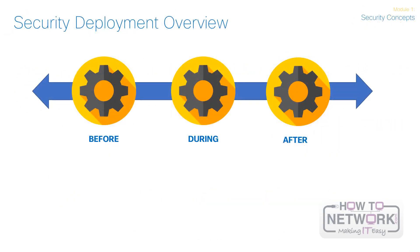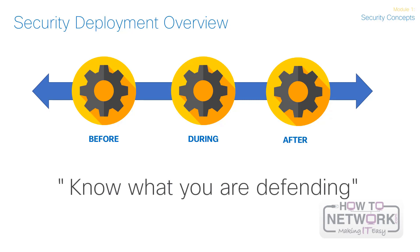Today's network security controls are expected to work across the attack continuum. Using a threat-centric security model addresses the full attack continuum across all attack vectors as shown in the following figure. The first part is the before phase. You need to know what you're defending from. It is important to be able to defend your network device inventory, including devices, operating systems, services, applications, users, etc.